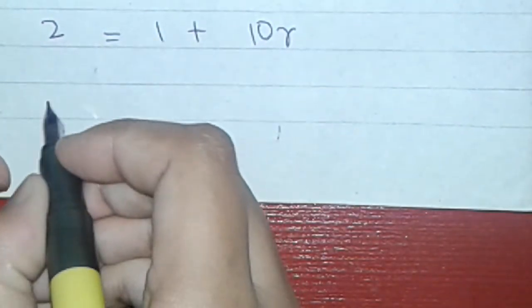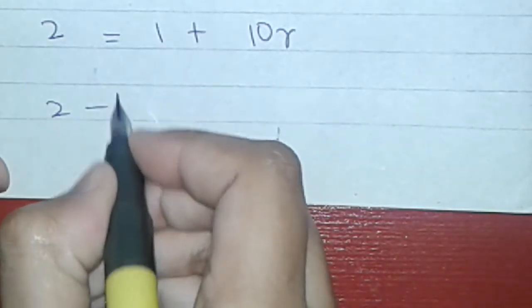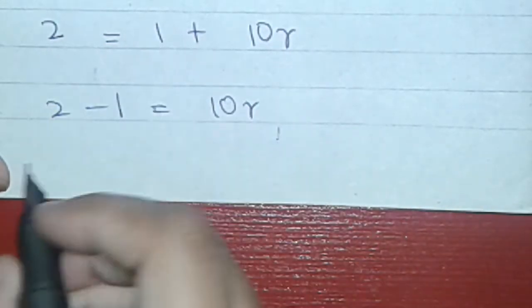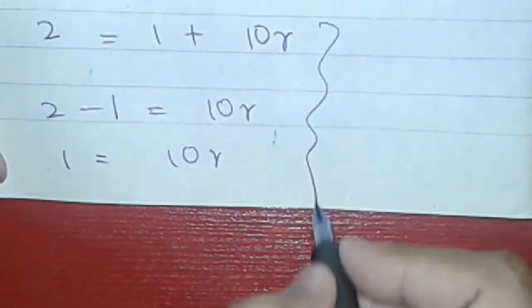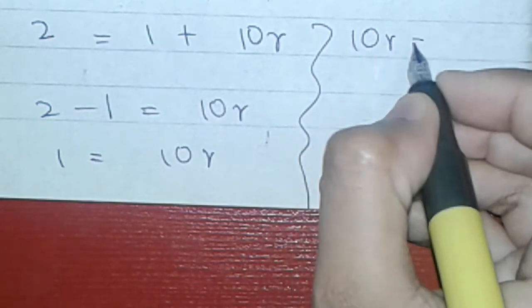Now everyone knows that here is 2. If we have 2 then it will be 1. 1 will be minus 1. Now we know that 1 is equal to 10r. Now we will solve the rest of this equation.